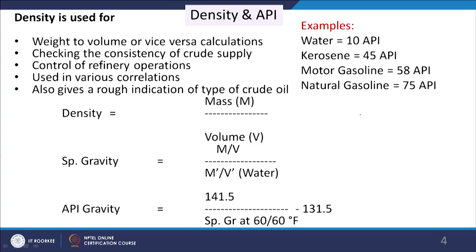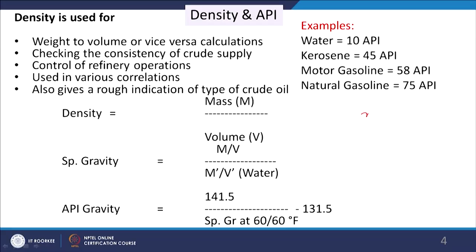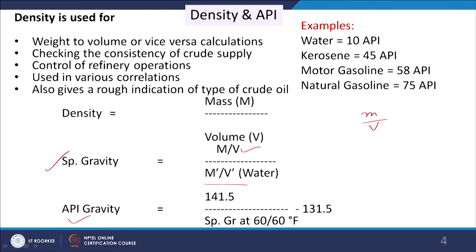First, we will see density and API gravity. As you know, density is mass by volume of any substance. Specific gravity is the density of the material divided by the density of water at 4°C. Similarly, API gravity has been defined by the American Petroleum Institute as: API gravity = (141.5 / specific gravity at 60°F) − 131.5.